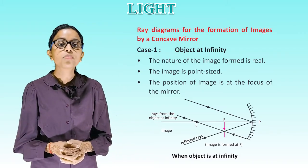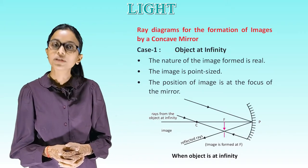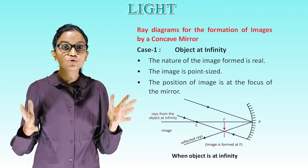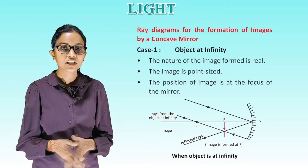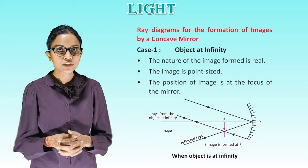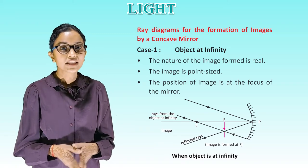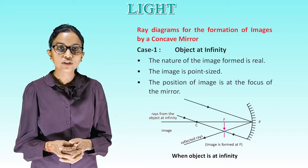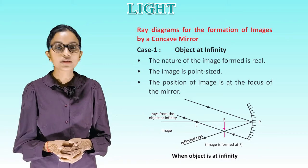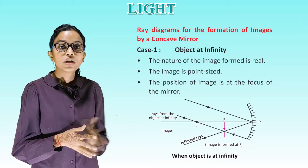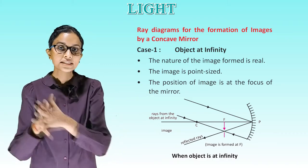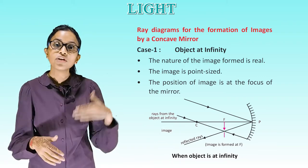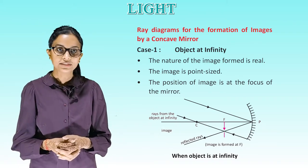Ray diagrams for the formation of images by a concave mirror. Case 1 — object at infinity: the nature of the image formed is real. The image is point-sized. The position of the image is at the focus of the mirror. This diagram shows the object at infinity.